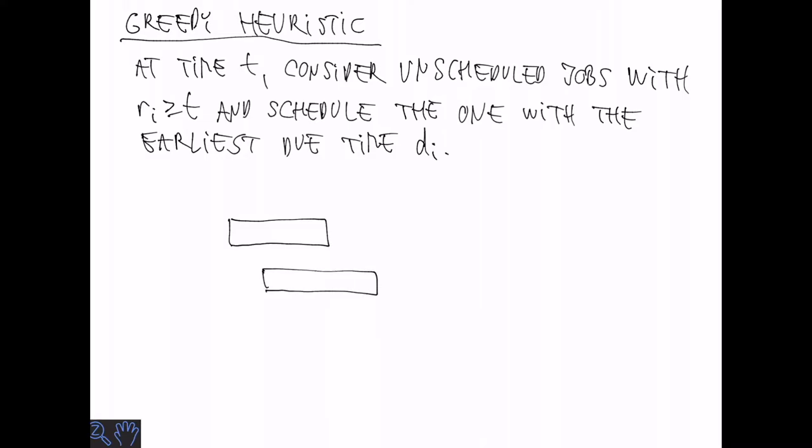So for example suppose these are the jobs. And this is time zero. And we have initially allocated each job at its release time. Of course this is an overlapping schedule so this is not yet valid. So we can move these back and forth.